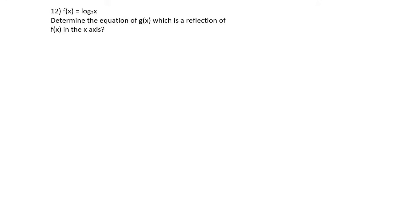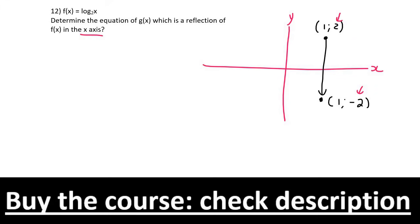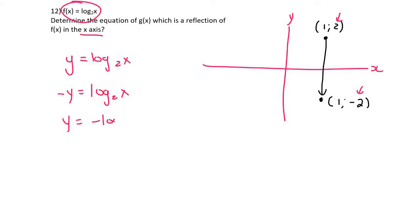To understand reflecting in the x-axis: a point (1, 2) reflected over the x-axis becomes (1, −2). The y-value becomes the negative of what it was. So for the equation y = log₂(x), reflecting in the x-axis means we put a negative in front of y: −y = log₂(x). Then divide by −1 to get y alone: y = −log₂(x). Since they ask for g(x): g(x) = −log₂(x).